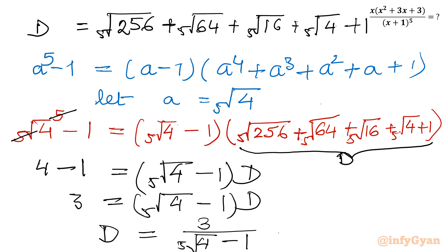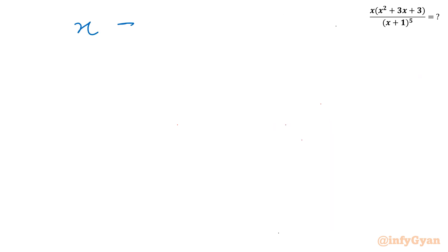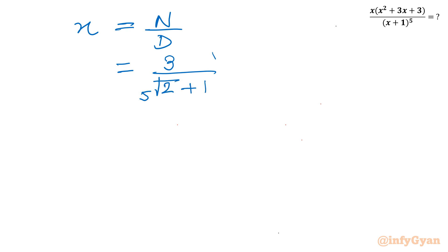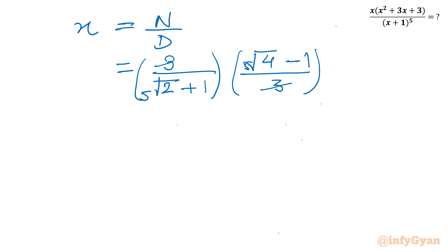We have calculated n and we have calculated d. Let us plug in the x value. So x equals n over d. The value of n was 3 over (5th root of 2 + 1), and 1 over d is (5th root of 4 - 1) over 3. So I can cancel 3 with 3, leaving x equal to (5th root of 4 - 1) over (5th root of 2 + 1).